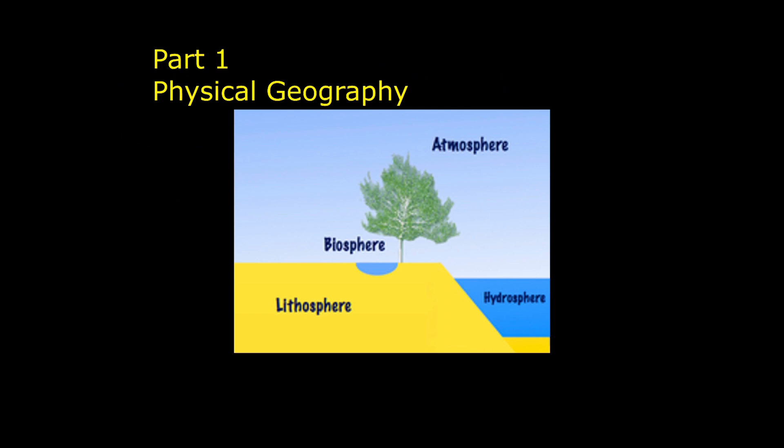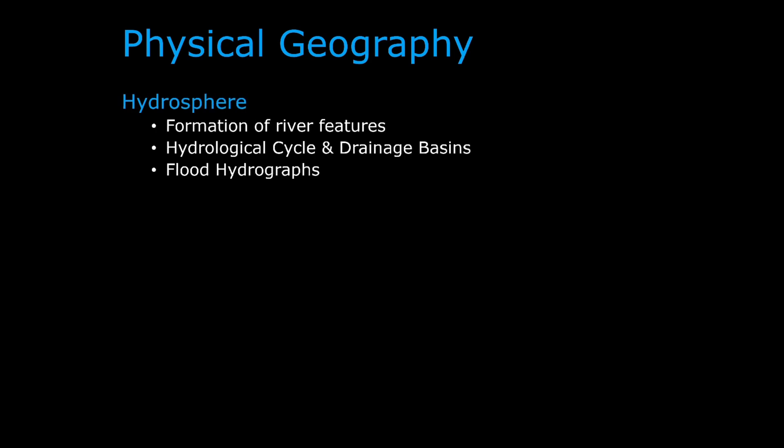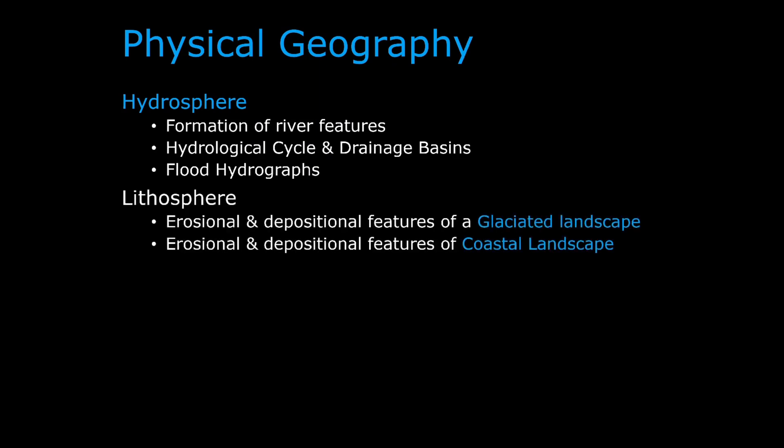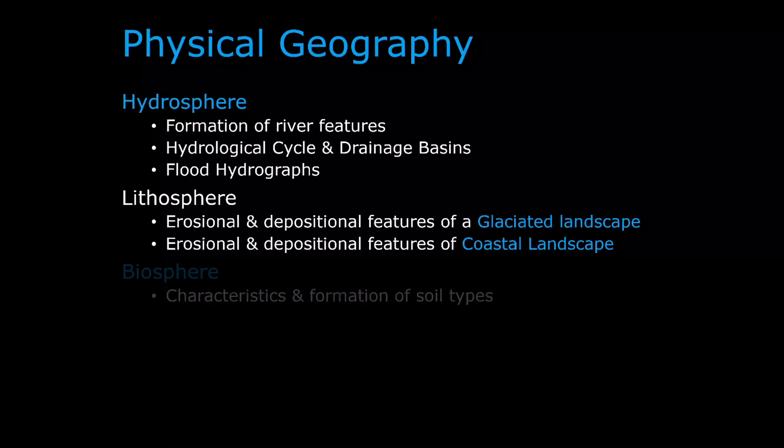Part one is Physical Geography, which has four sections. Hydrosphere covers the formation of river features, the hydrological cycle, drainage basins and flood hydrographs. Lithosphere covers the erosional and depositional features of glaciated landscapes and coastal landscapes. Some of these you'll have done before, but some will be brand new, and we'll be doing the old ones in more depth about what actually happens when each one forms.